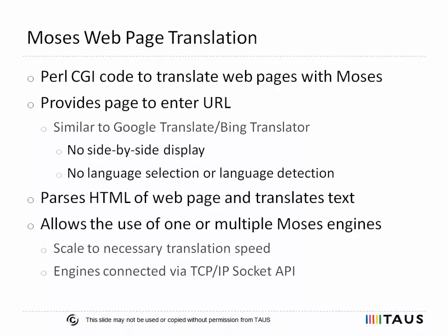The larger machine translation as a service offerings like Google Translate and Bing Translator all support the translation of web pages. With a MOSES web page translation contribution by Hervé Saint-Amont, similar functionality to translate web pages on the fly is available for trained MOSES MT systems. This component, which has to be set up on the web server, parses the text from the HTML content and translates it using one or multiple MOSES MT systems connected through a TCP/IP socket API. Depending on the required responsiveness, distribution of the machine translation across a cluster of machines might be necessary.